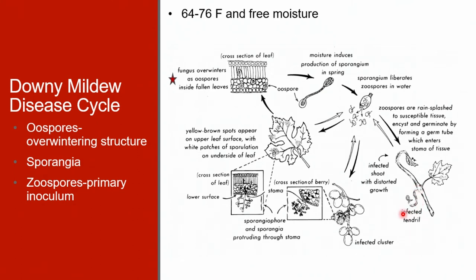The hyphae grow exclusively inside the host tissue, and infected leaves are the primary source of spores that induce fruit infections. At night, when temperatures are above 55 degrees Fahrenheit and relative humidity is high, sporangiophores erupt preferentially through stomata on the lower surface and produce more sporangia.